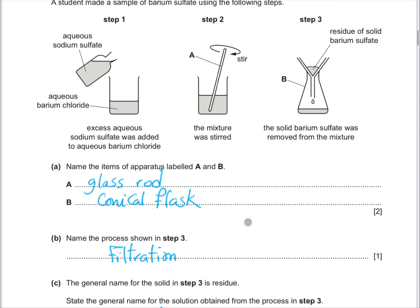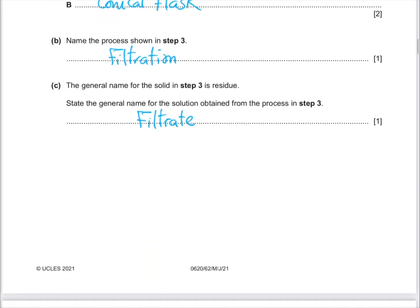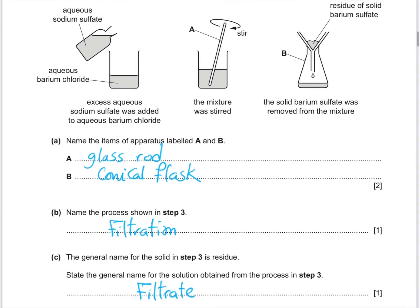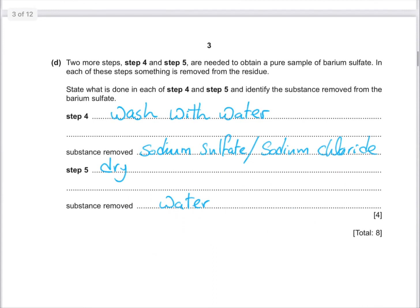After that, the process that we use in step 3 is called filtration. The general name for solid in step 3 is residue. State the general name for solution obtained from this process. The solution is called filtrate.